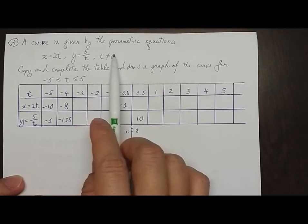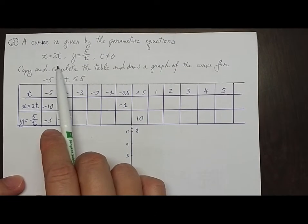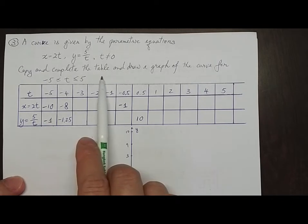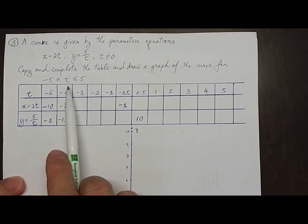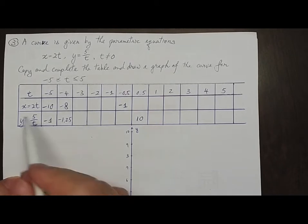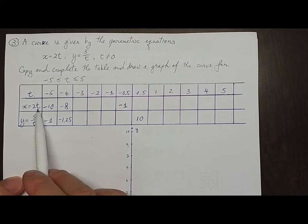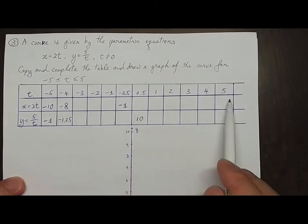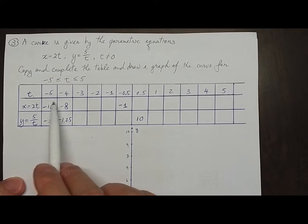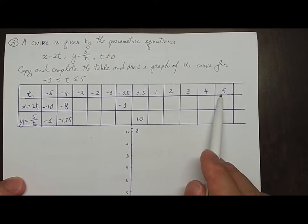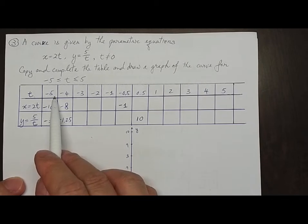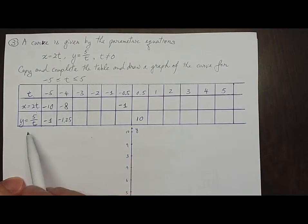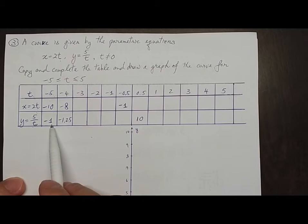Question 3: A curve is given by the parametric equation x = 2t, y = 5/t, where t is not equal to 0. Copy and complete the table and draw a graph of the curve for t from −5 to 5. You draw a table with t, x = 2t, and y = 5/t. When t = −5, you substitute into 2t to get x = −10, and y = 5/−5 = −1.